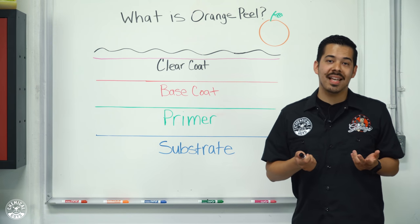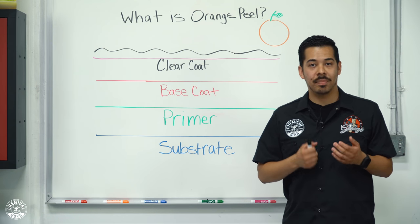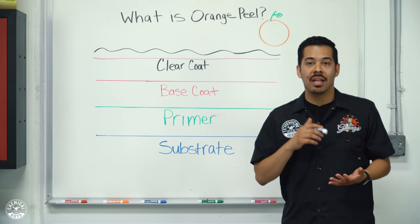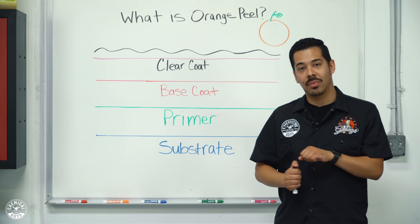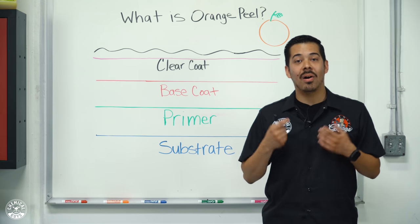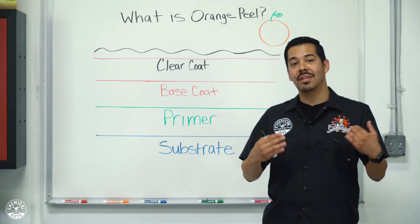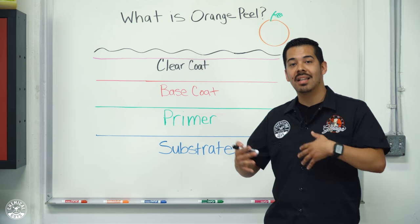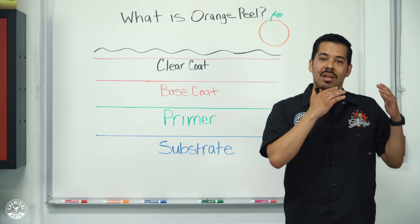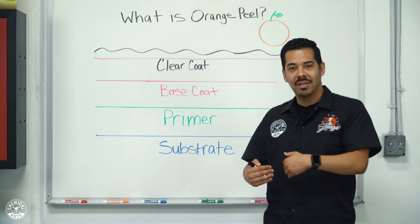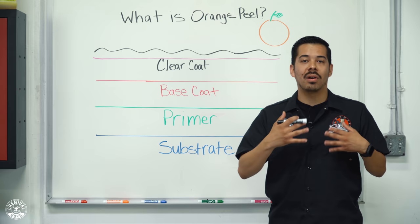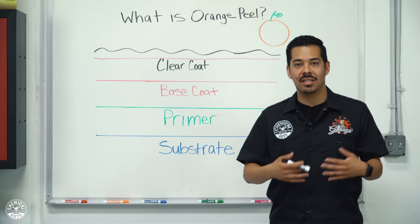If the orange peel is not that bad, then you can simply just go ahead and get your polisher, get a rubbing compound and a cutting pad, and you can simply polish it right out. So once you're done polishing it out, all your orange peel, now you can move on to your favorite step of the detailing process where it comes to glazing, sealing and waxing your paint so that you protect your paint after all the work that you've done and put into it so it doesn't just go to waste.